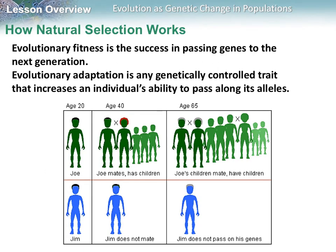Evolutionary fitness is the success in passing your genes to the next generation. An adaptation is any genetically controlled trait that increases your ability to pass along its alleles. For example, Joe has a mate and children, and those children have children — compared to Jim, who does not mate and does not have children. In terms of evolutionary fitness, Joe has higher fitness than Jim because Joe passes his genetics on to the next generation.